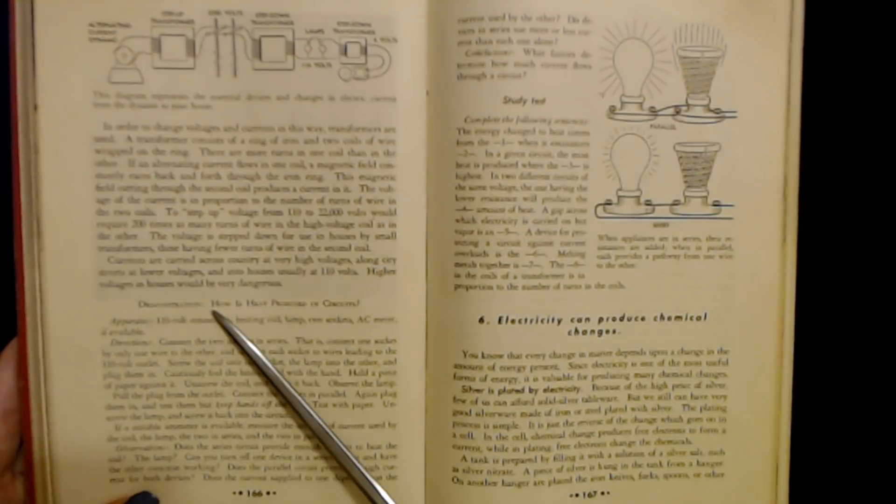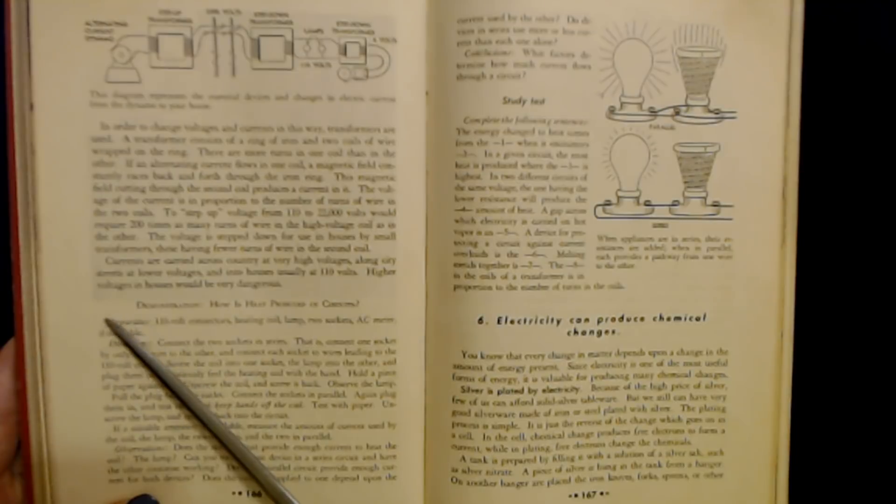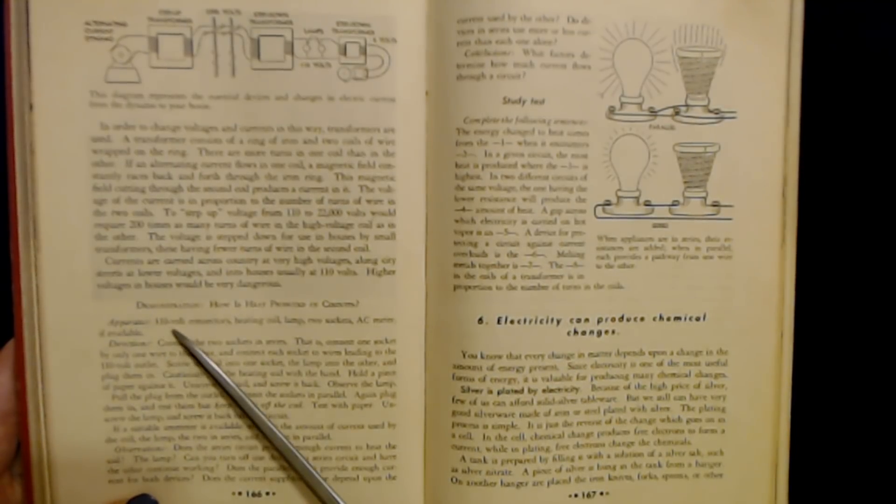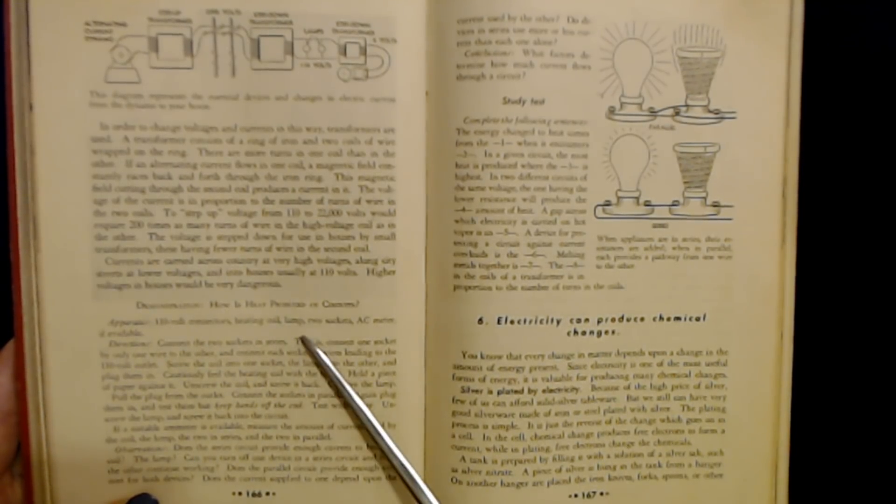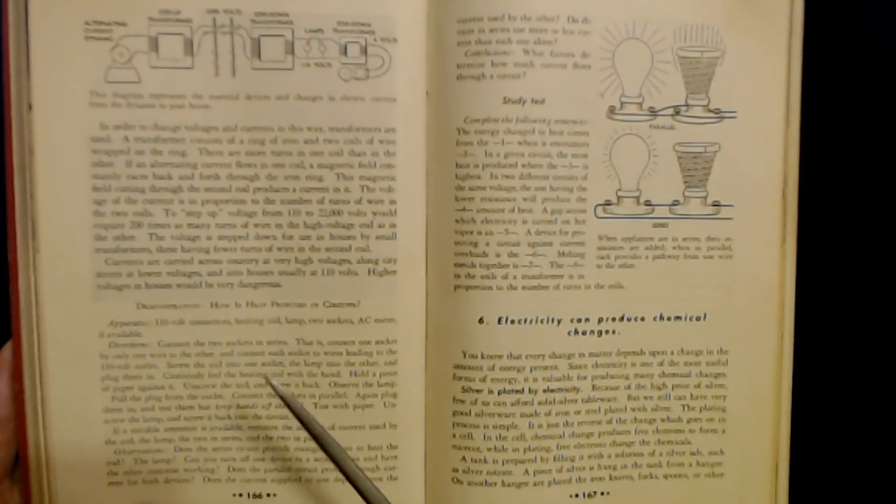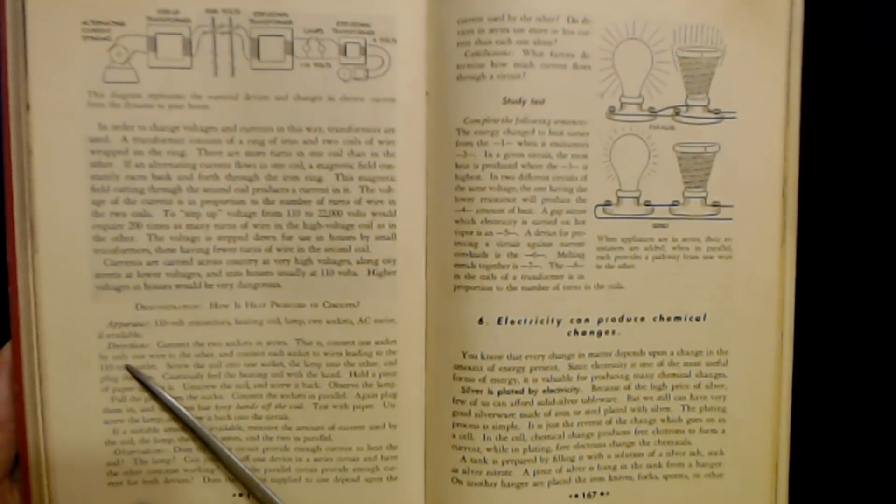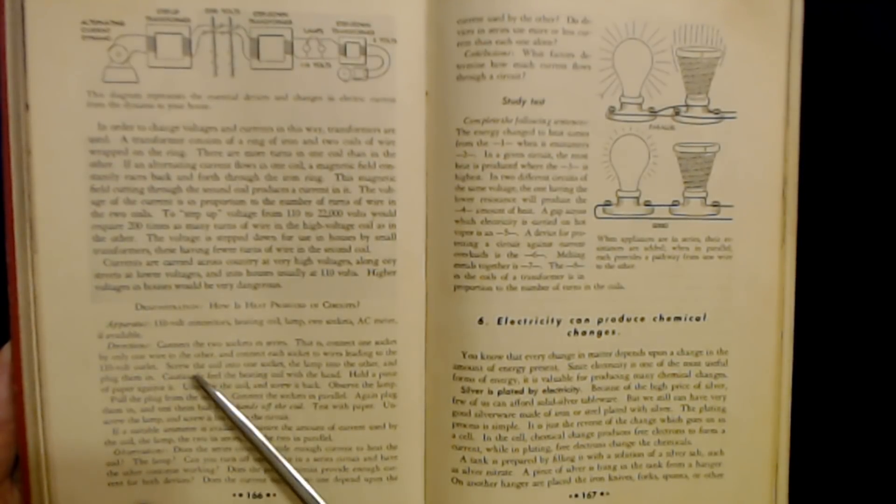And as a demonstration, we have this: How is heat produced in circuits? And for your apparatus, you need 110 volt connectors, heating coil, lamp, two sockets, an AC meter if available. And here are your directions. Connect the two sockets in series. That is, connect one socket by only one wire to the other and connect each socket to wires leading to the 110 volt outlet. Screw the coil into one socket, the lamp into the other, and plug them in.